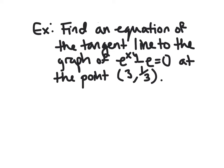So let's do another example where we're actually evaluating a derivative. So we want to find an equation of the tangent line to the graph of the equation e to the xy minus e equals 0. So first of all, note that this really is a point on this graph because 3 times 1 third or x times y there is 1. And e to the 1 is e. So e minus e is indeed 0. So to find the tangent line, our slope is exactly dy/dx. So we need to find that first.